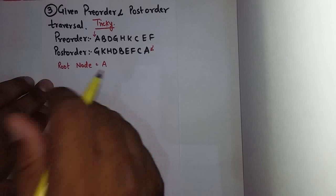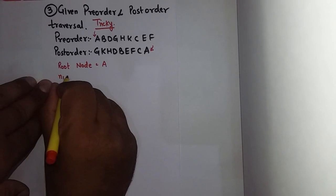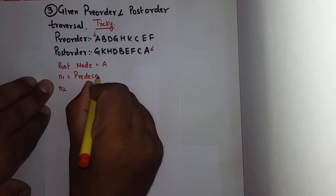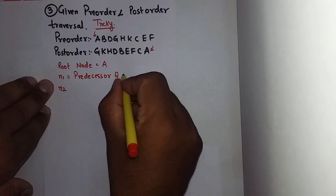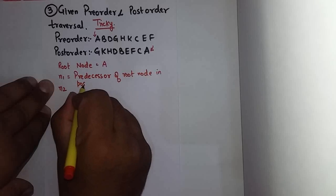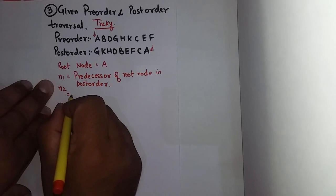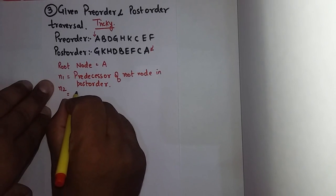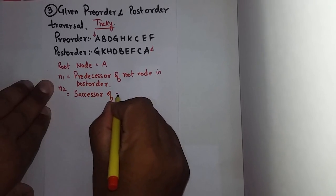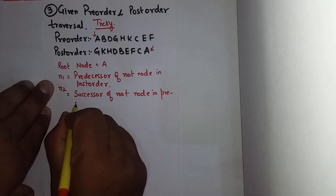Now we need to find N1 and N2. N1 is the predecessor of root node in post-order traversal, and N2 is the successor of root node in pre-order.